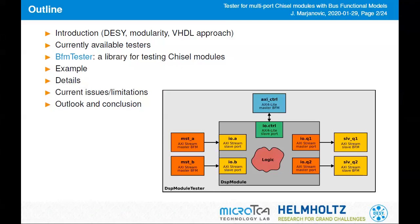First, I'm going to introduce ourselves, what we do — and modularity is very important for us — and present how we test right now in VHDL. Then I'll do a quick overview of available testers in Chisel and later present BFM testers, a new library built on top of the peek-poke tester which allows you to test more complex modules. I'll illustrate how to use this library with an example, dig into the implementation details, discuss one issue, and draw a conclusion at the end.